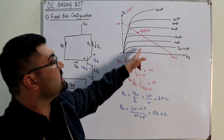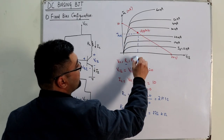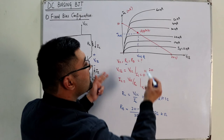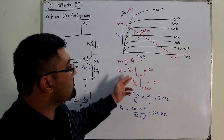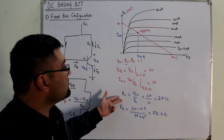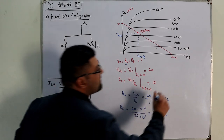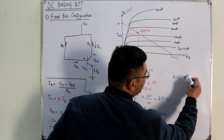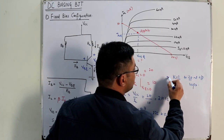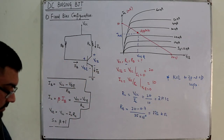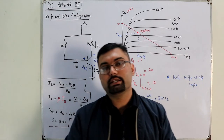So when given a load line with the output characteristics, you can read off VCEQ and ICQ from the Q-point, determine the x and y intercepts to find VCC and RC, and use the basic KVL formula to find RB. The key concept is KVL applied to both input and output loops. That is it for the fixed bias configuration — see you in the next video with the next biasing configuration.